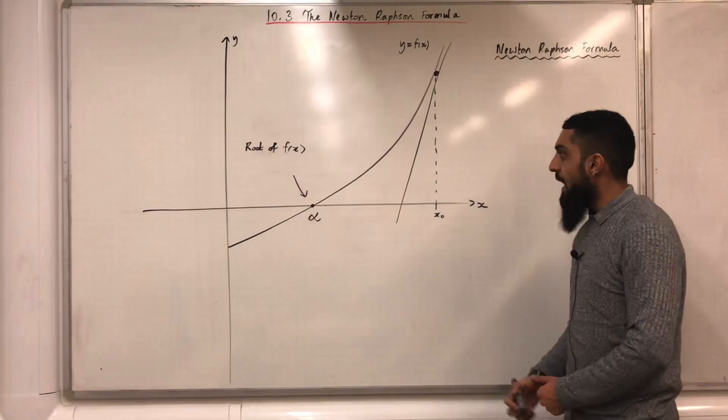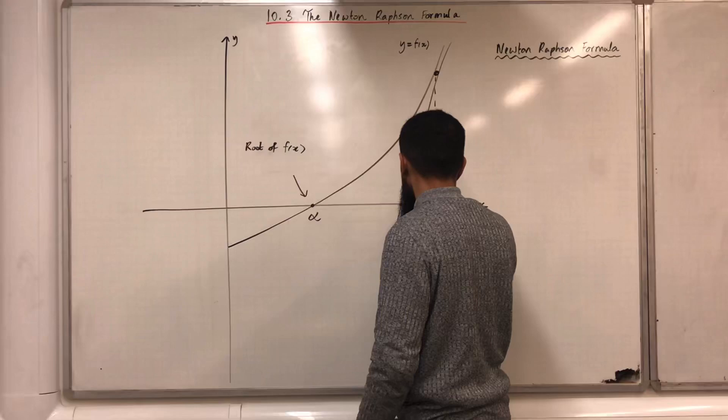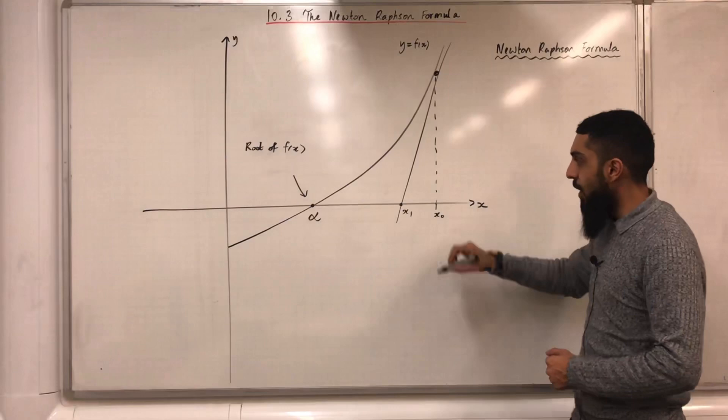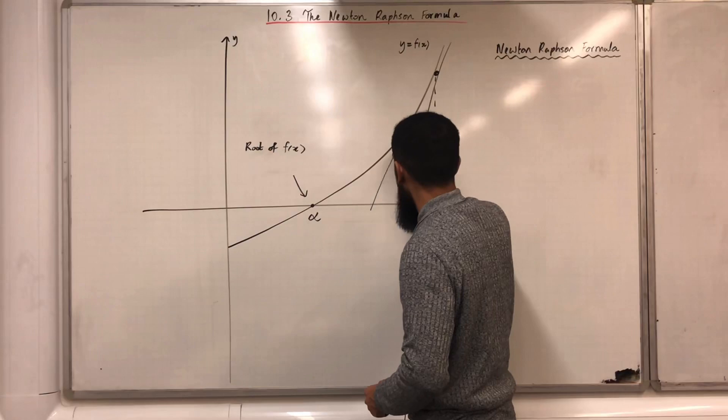The x-intercept of this tangent, we label it as x1. Now, I'm going to draw a tangent to the curve y equals f(x) at the point x1. The x-intercept of this tangent, we label it as x2.